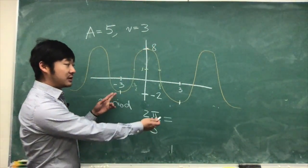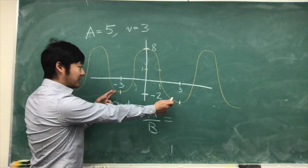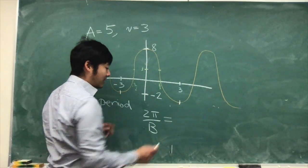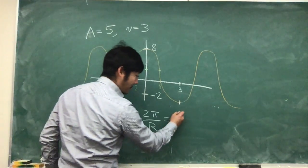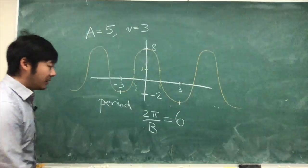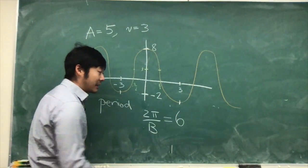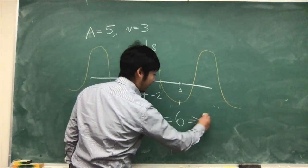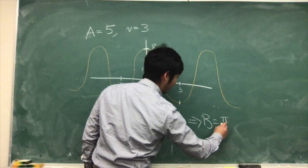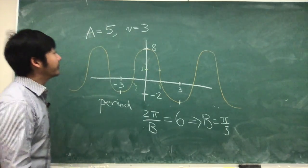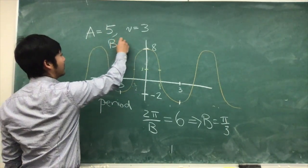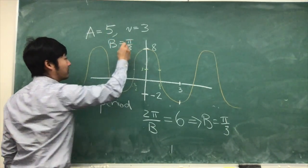The easiest one to see is from negative 3 to 3, which means that's 6. If we cross multiply and solve for b, we get that b is π over 3 in this example.